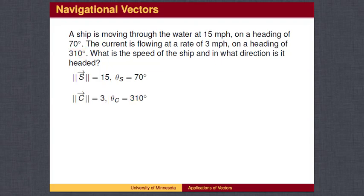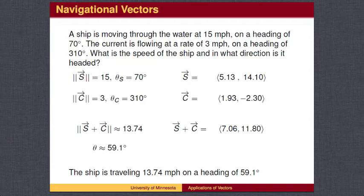We first convert to rectangular coordinates, then add the vectors, then convert back to polar coordinates. The current, which is pushing back against the ship, slows the ship down to 13.74 miles per hour and changes its course to 59.1 degrees.